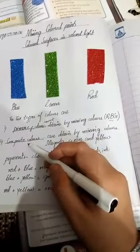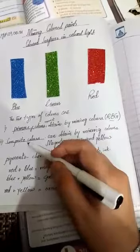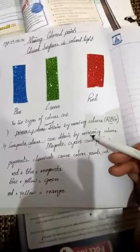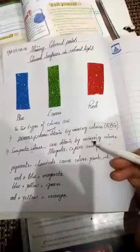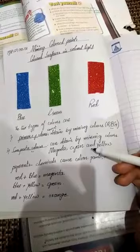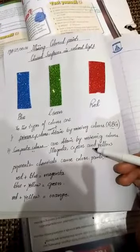The other type of colors are composite colors. What actually are the composite colors? The composite colors are those colors that can be obtained by mixing colors just like magenta, cyan and yellow.